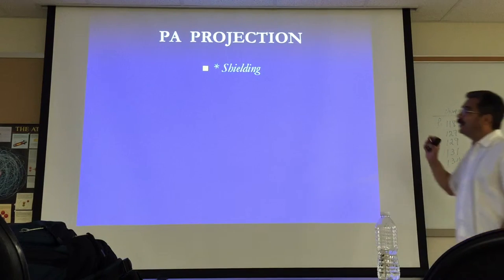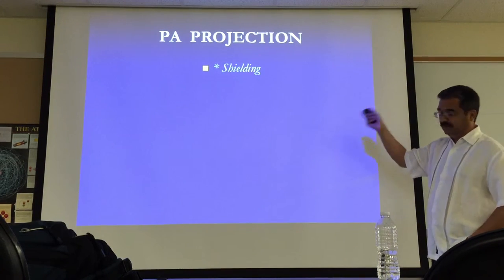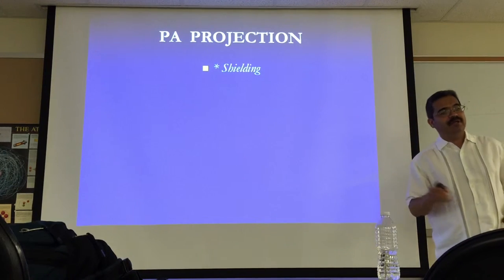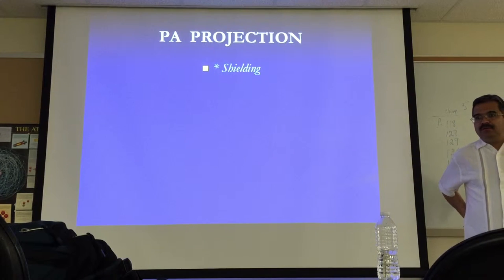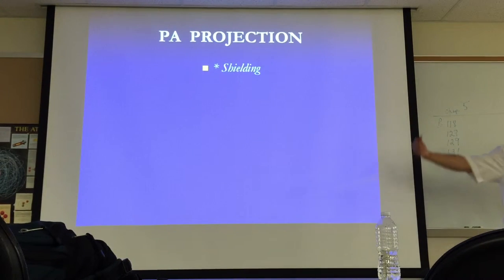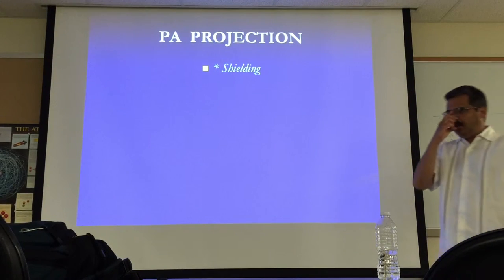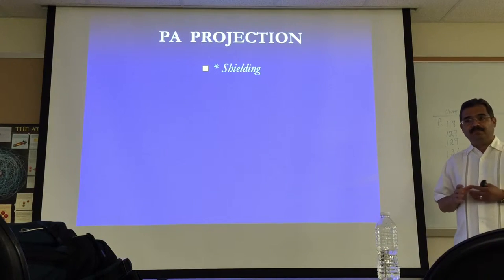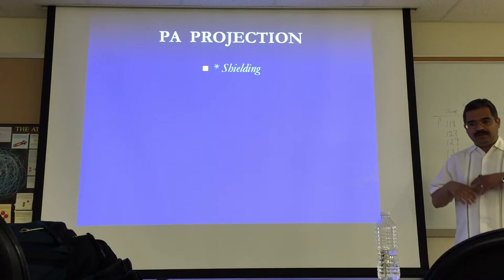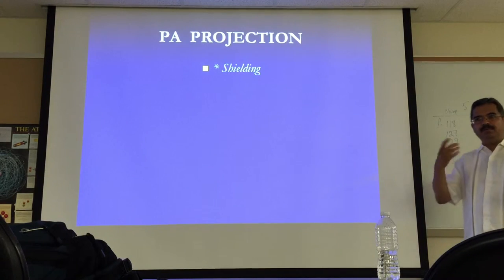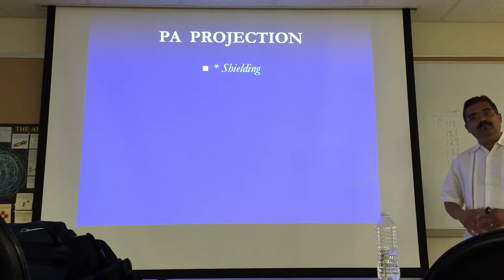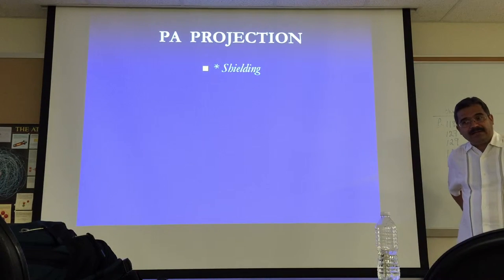The first thing I'm bringing up is shielding. We're going to shield every patient. For a PA projection, you want to place the shield in the back, because the x-rays are coming from the back. You will sometimes hear technologists say you want to put a shield in the front — it is possible, and we'll cover that in radiobiology next semester. But for the most part it will be in the back.